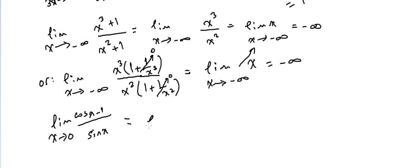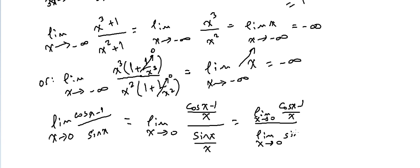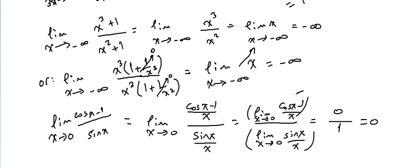This is simple because we can write it as the limit as x approaches 0 of (cos(x) − 1)/x divided by sin(x)/x. I'm dividing both numerator and denominator by x. So it becomes the limit of (cos(x) − 1)/x over the limit of sin(x)/x. The limit of sin(x)/x as x approaches 0 equals 1, and the limit of (cos(x) − 1)/x equals 0. So the answer is 0 over 1 equals 0.